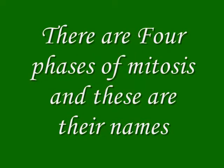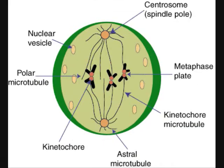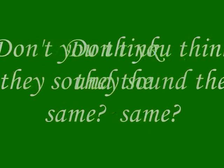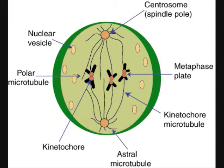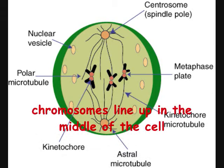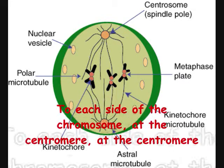There are four phases of mitosis and these are the names: Prophase, metaphase, anaphase, telophase — don't you think they sound the same? In metaphase, the nuclear membrane is gone.